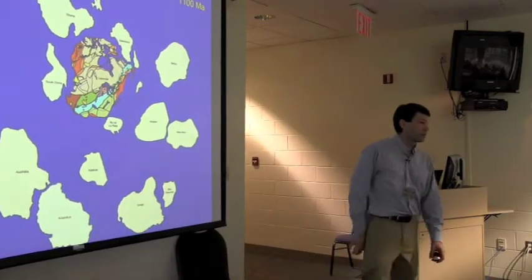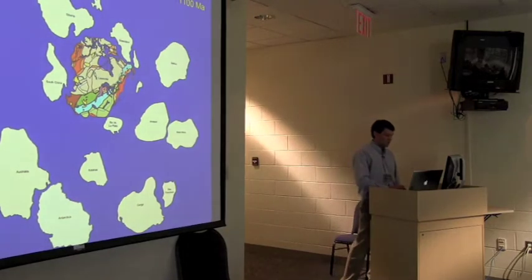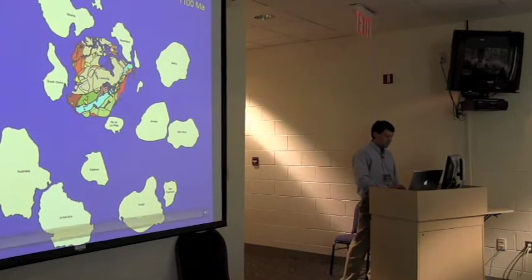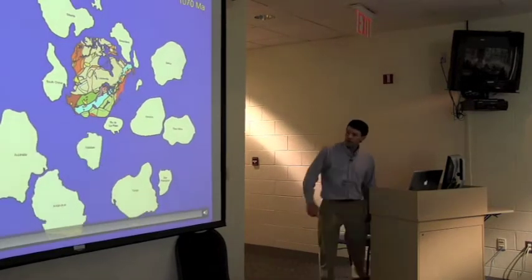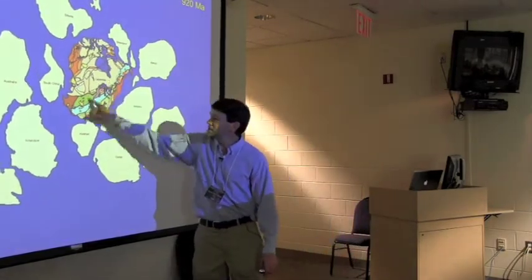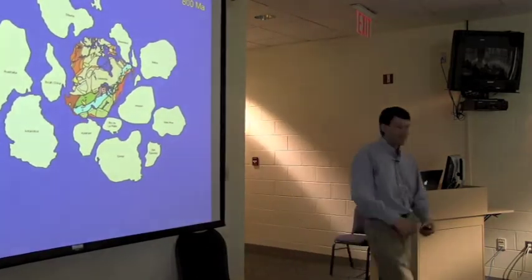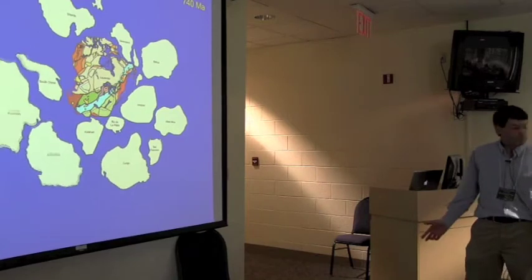But what happened leading up to the Grenville Orogeny is we built these things as a supercontinent. So they gradually, all these pieces come together. And look at that. North America is sitting right in the center here. So there's the supercontinent of Rodinia. And then like all supercontinents, it breaks up.